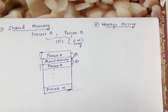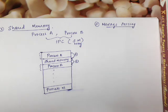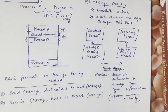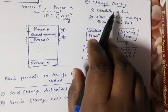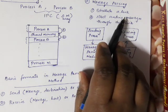The second method of IPC is message passing. Message passing is not a shared memory concept. In message passing, there is a communication link established between process A and process B. First, a link is established. Second, they send messages through that link. This message is sent in a specific format.